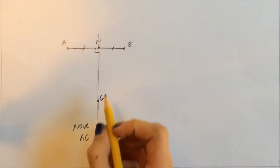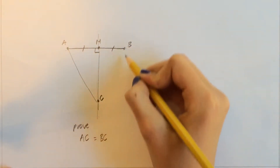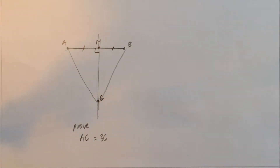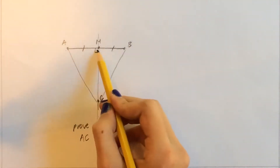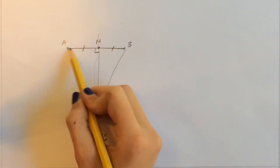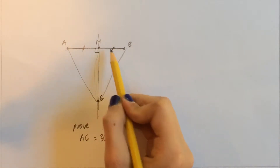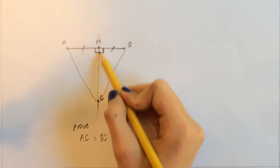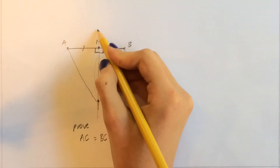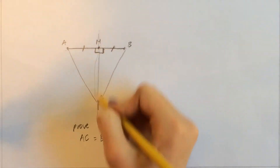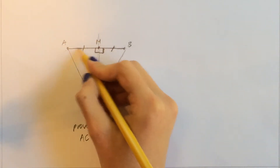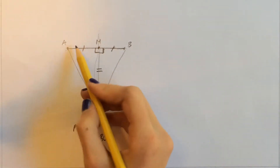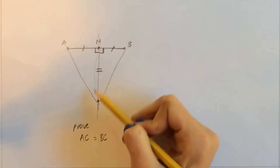So let's connect A to C and B to C. The first thing we want to do is look at these two triangles right here. These two triangles have one congruent side and one congruent angle. We also know that MC is congruent to itself by the reflexive property, so MC is equal to MC, which means these two triangles have another side in common. These two triangles are AMC and BMC.